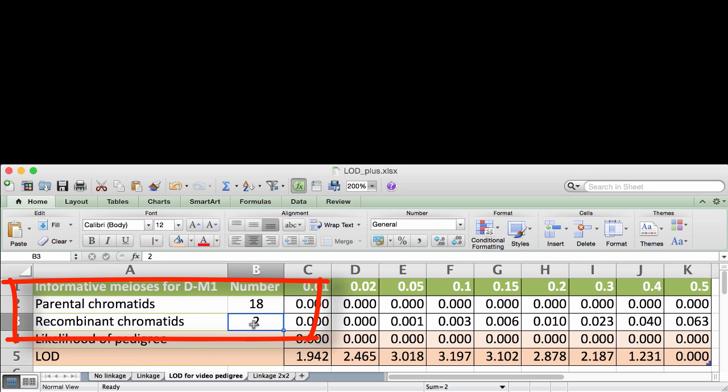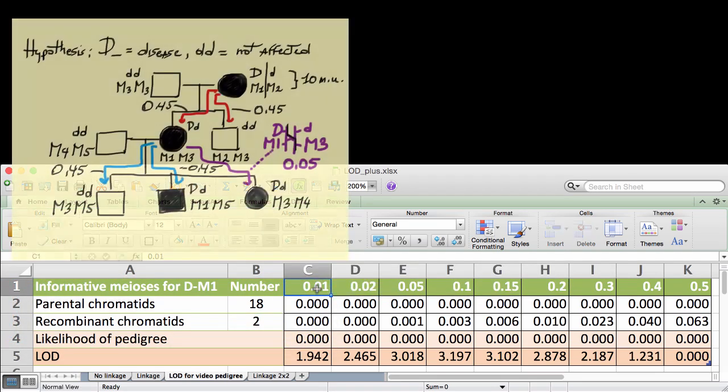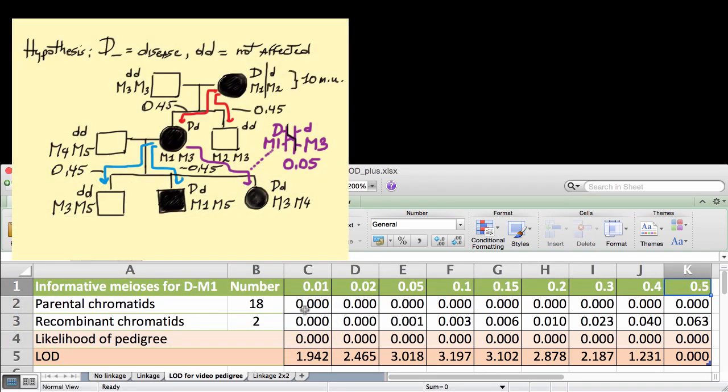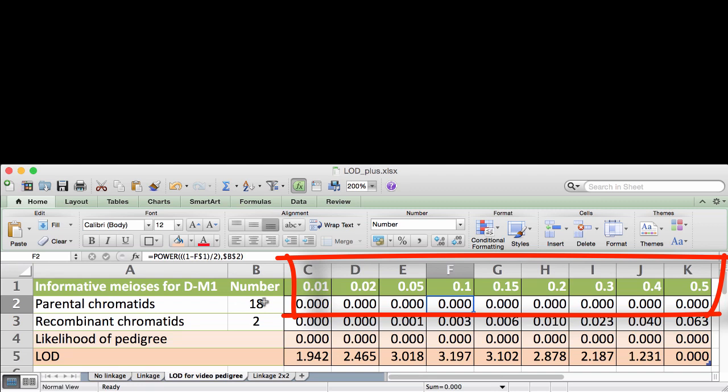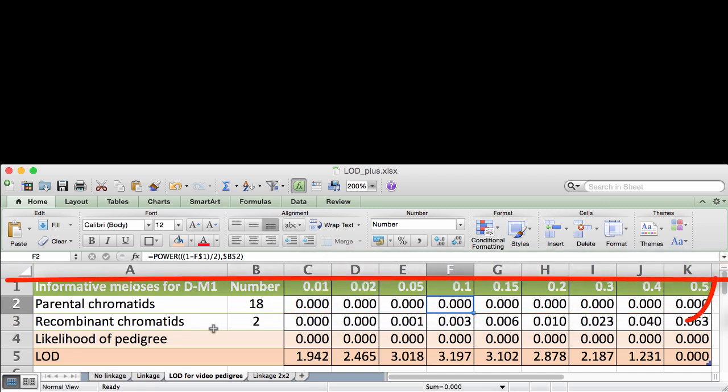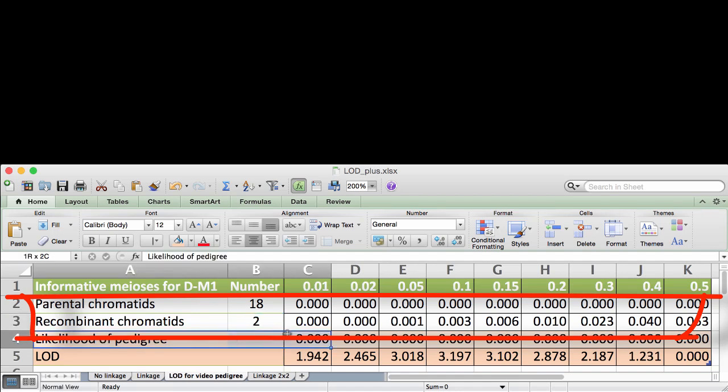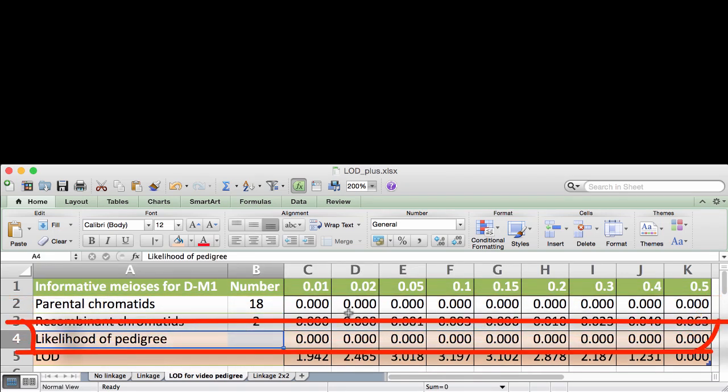The input is the number of parental and recombinant chromatids. In our example, the blue and red events correspond to parental, the violet event to recombinant. For a range of theta, the sheet calculates the cumulative probability of the parental and recombinant chromatids and then the probability of the pedigree.